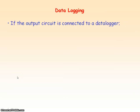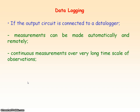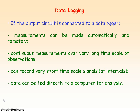If the output of the potential divider circuit is connected to a data logger then measurements can be made automatically and also remotely, meaning at a distance away. You could also take continuous measurements over very long time periods — days, weeks, or even months — and also take measurements at very short time intervals. All these measurements could then be fed directly to a computer where you can do data analysis.